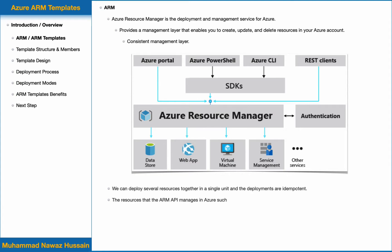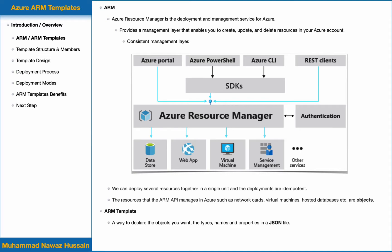The resources that the ARM API manages in Azure — such as network cards, virtual machines, hosted databases, etc. — are objects. We can declare these objects in a simple JSON file, and that JSON file is called an ARM template. So an ARM template is a way to declare the objects you want: the types, names, and properties, all in a JSON file.